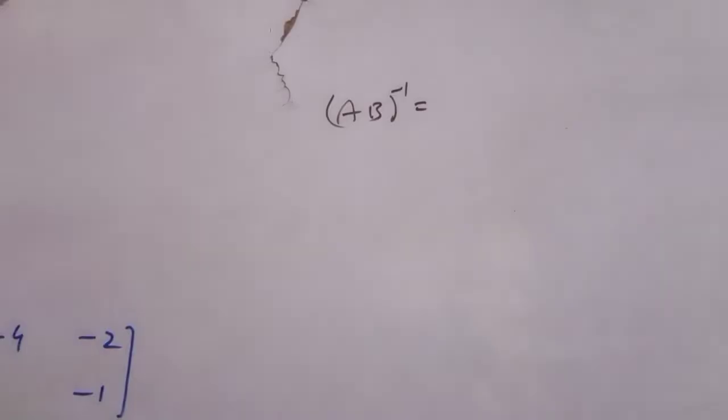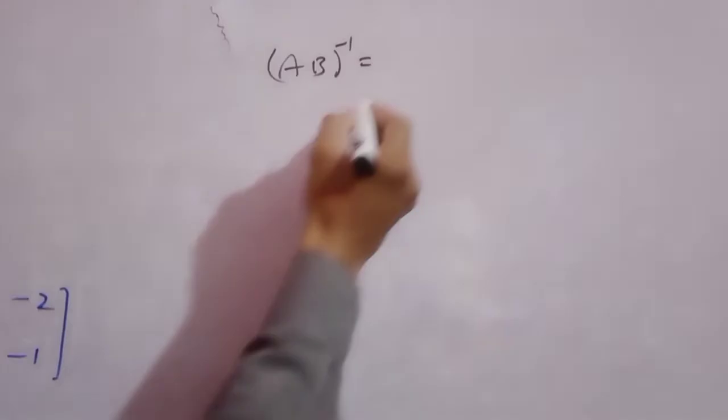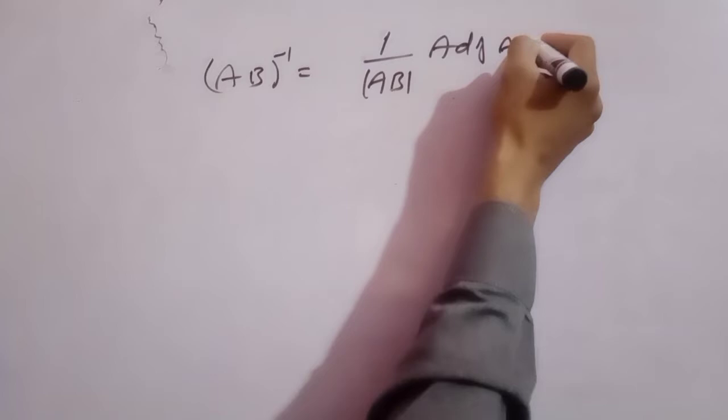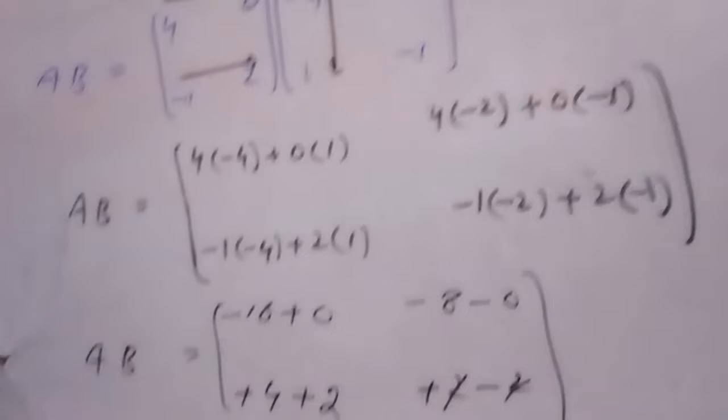अब हमने AB find करना है — AB का whole inverse। Formula देखते हैं: यह वही inverse है जो question number 3 और 4 के अंदर भी हमने solve किया। Formula है: 1 over det(AB) × adjoint(AB). AB matrix जो हमने find किया उसका det find करते हैं। AB का det है: AB matrix हमारे पास minus 16, minus 8, 6, and 0।